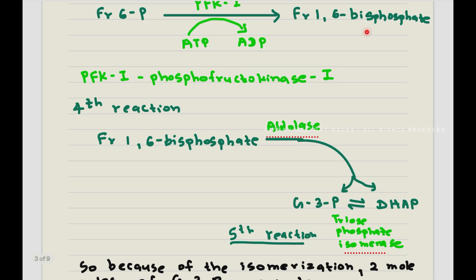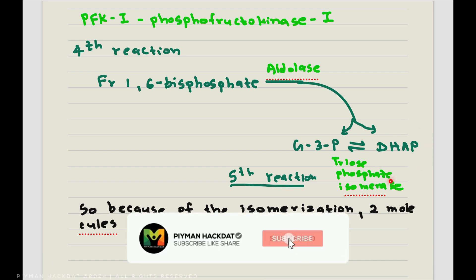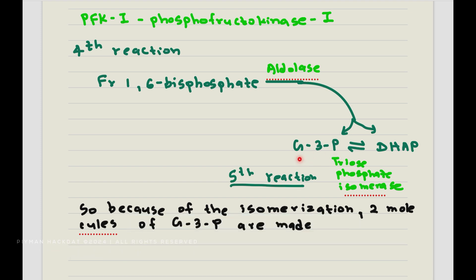Then, fructose-1,6-bisphosphate with the help of aldolase turns into glyceraldehyde-3-phosphate and dihydroxyacetone phosphate — that is the fourth reaction. In the fifth reaction, dihydroxyacetone phosphate with the help of isomerase is turned into another molecule of glyceraldehyde-3-phosphate. So at the end of this reaction, you will have two molecules of glyceraldehyde-3-phosphate.